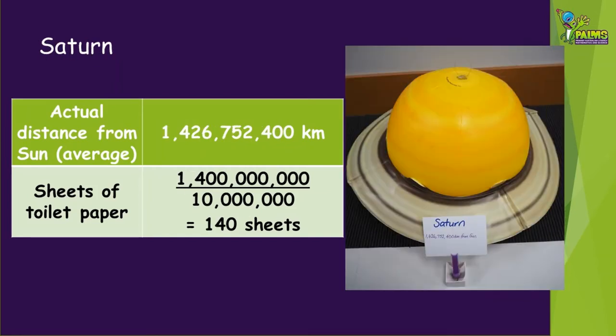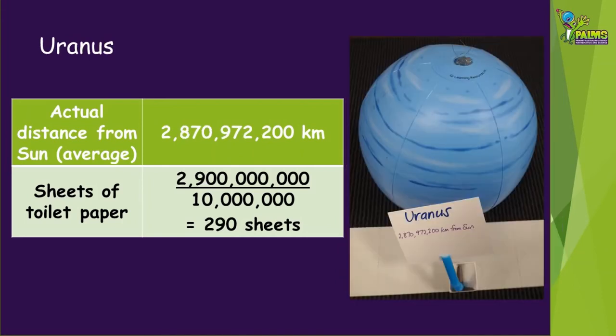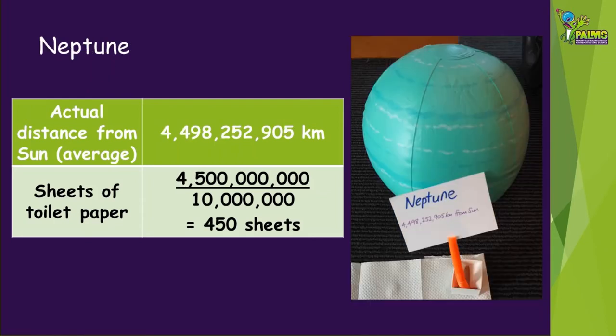Now our distances are in the billions, we're going to round to the nearest 100 million. The planet with the most visible rings, Saturn, is about 1,400,000,000 kilometres from the sun, so it will be at the 140 sheet mark on our roll. The planet that rotates on its side, Uranus, is about 2,900,000,000 kilometres from the sun, so our scale distance will be 290 sheets of toilet paper. And finally, the furthest planet from the sun, Neptune, will be 450 sheets of toilet paper away from the sun in our toilet paper scale.